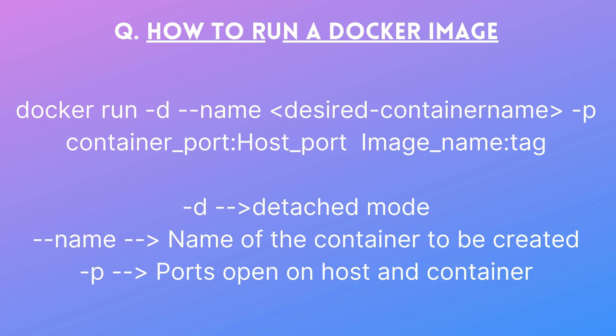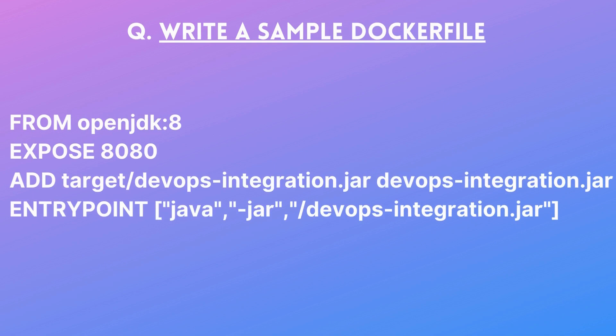Writing a sample Dockerfile was asked in multiple interviews. In a Dockerfile, each line starts with a capitalized command keyword. The first line is `FROM openjdk:8` — `FROM` specifies the base image on which our application will run. Then we have `EXPOSE 8080`, which exposes the port on the container where the application will be accessible. Then we have `ADD`, which is used to copy something — in this case we copy from the local target folder to the container.